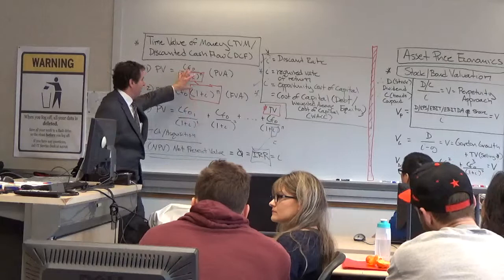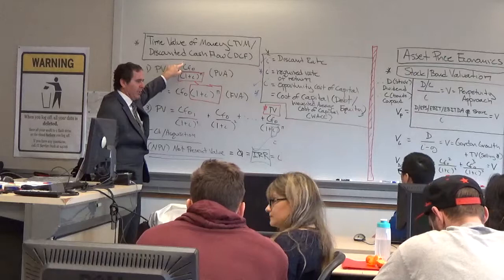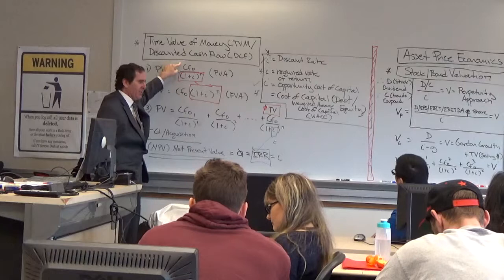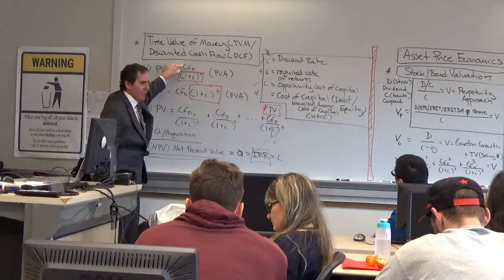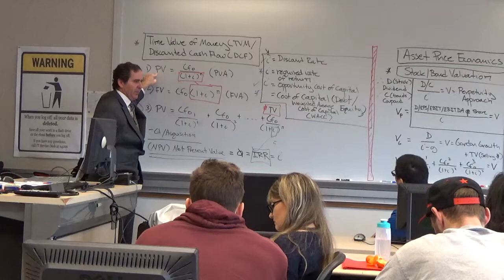So if this is debt coupon divided by debt cost of capital, it's the value of bonds. This is cash flow from earnings per share or dividends divided by the cost of equity—it's the value of the stock. This could be the cash flow from the company divided by the weighted average cost of capital of the firm—it's the value of the firm.